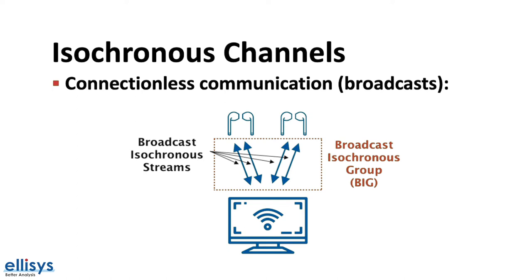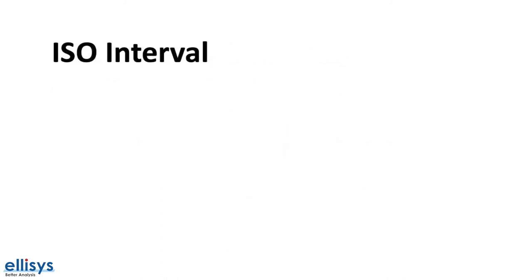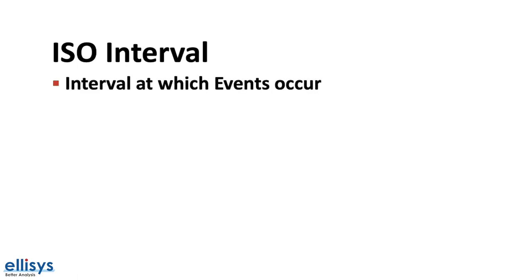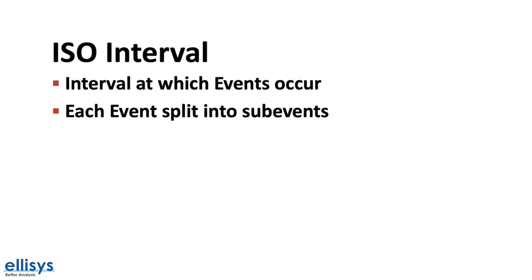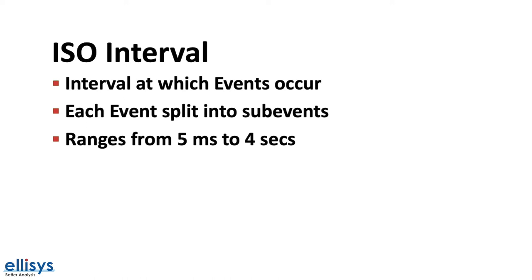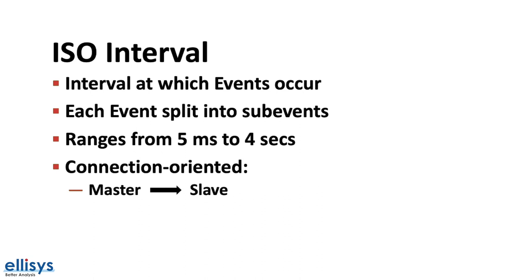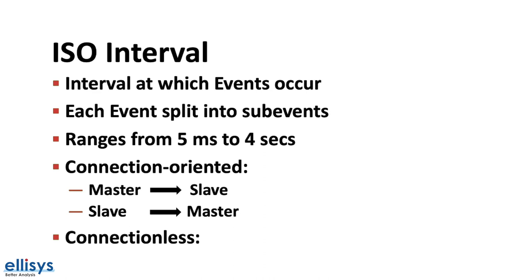Just as in the case of CIGs, a device may also create multiple BIGs. One important parameter in isochronous channels is the ISO interval. It defines the interval at which events occur. Each event is split into multiple sub-events. The ISO interval ranges from 5 milliseconds to 4 seconds. In connection-oriented communication, in each sub-event the master will send a packet to the slave and the slave will respond with a packet. In connectionless communication, only the master will send a packet in each sub-event, and these packets could either be isochronous data or broadcast control information data.